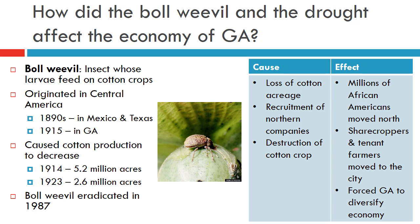According to the New Georgia Encyclopedia, due to the destruction caused by the boll weevil, Georgia's cotton farmers went from producing 5.2 million acres of cotton in 1914 to 2.6 million acres in 1923. The boll weevil had a huge impact on Georgia's economy and rural population.